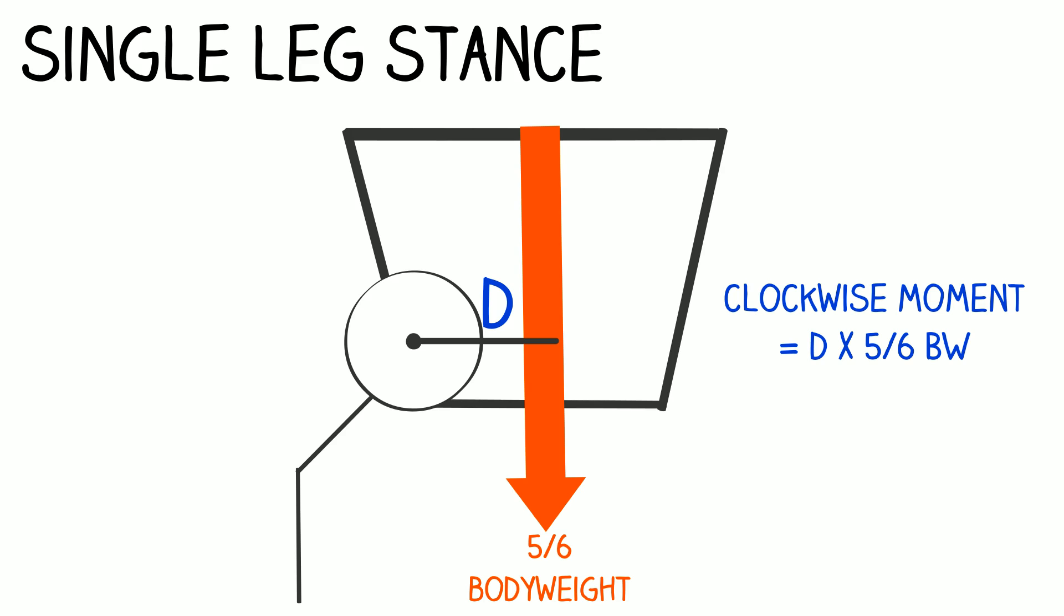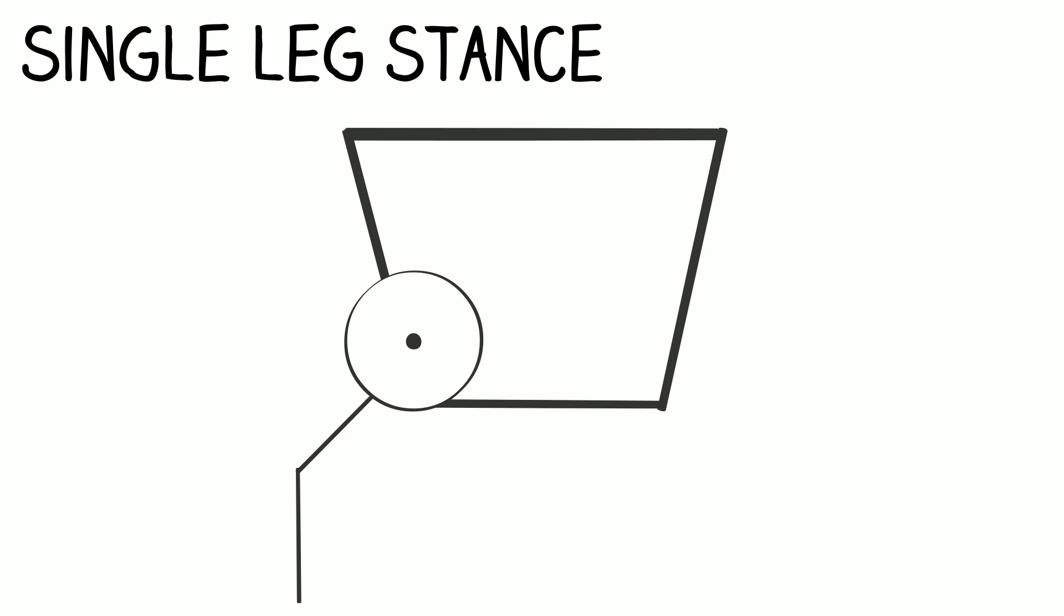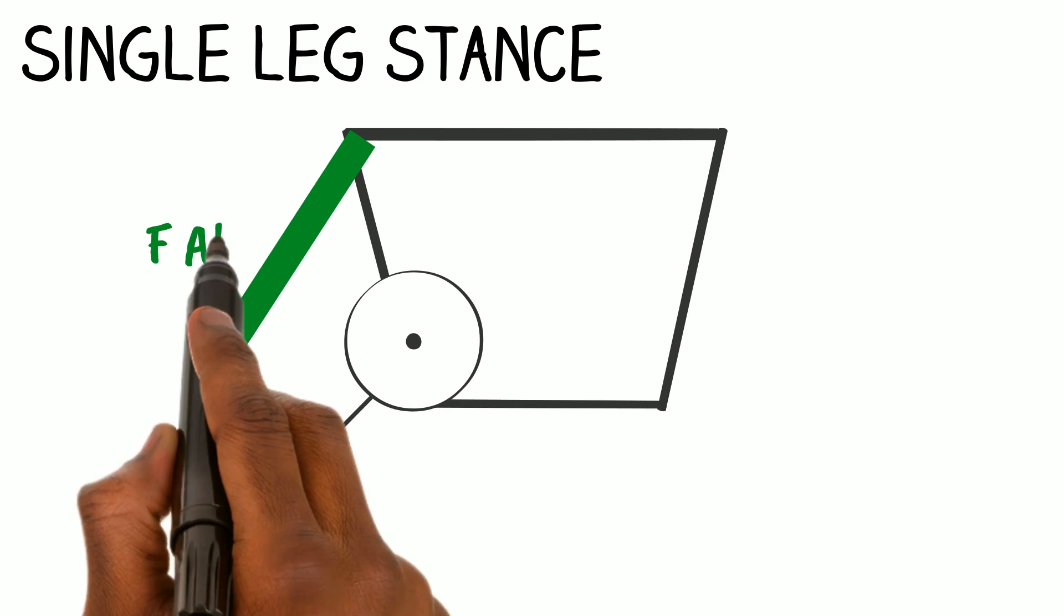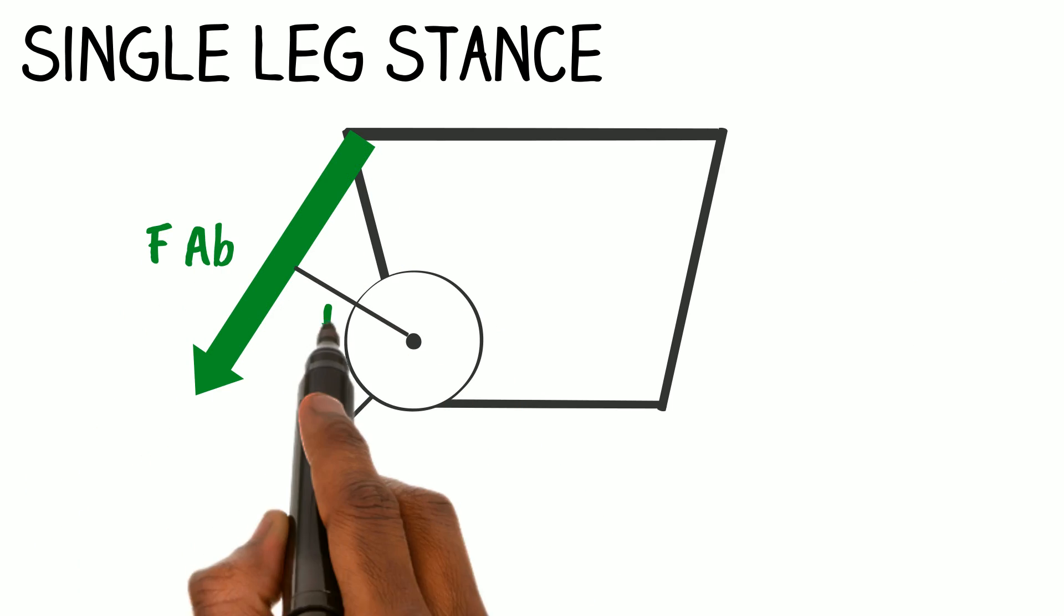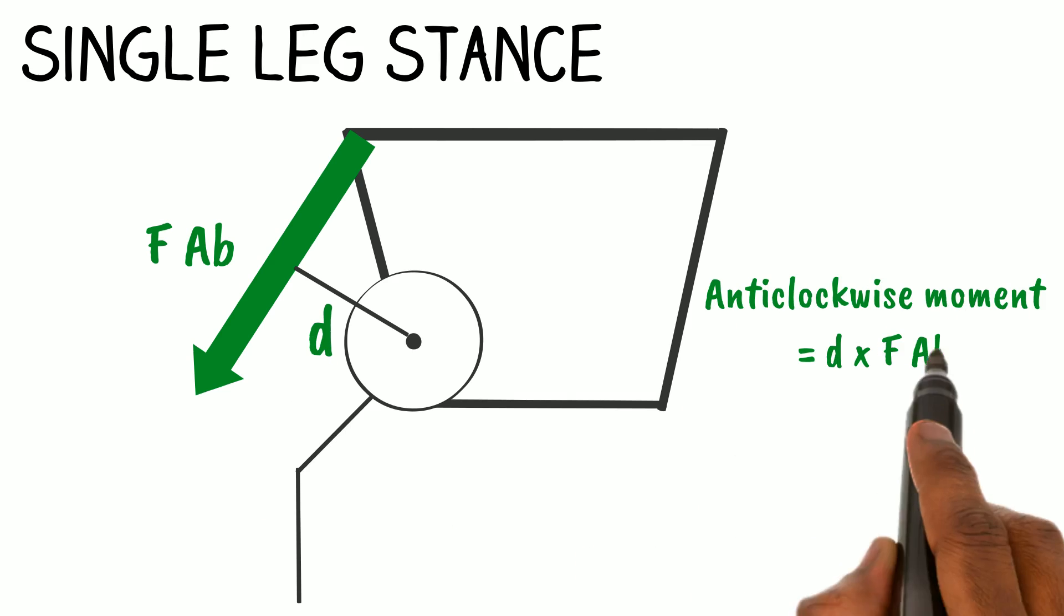The clockwise moment is D times five-sixths body weight. The force of the abductors is marked FAB. And the perpendicular distance to the hip's center of rotation is little d. The anti-clockwise moment is d times FAB.